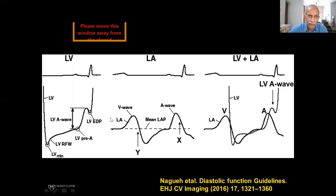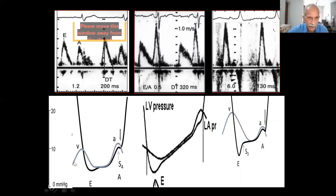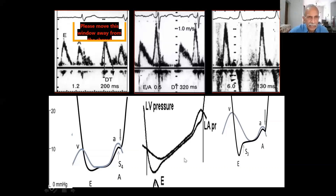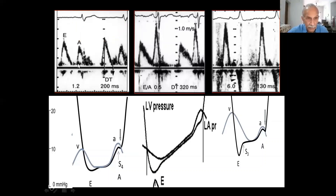Here is a Doppler pressure tracing. The normal one — LV comes down, LA pressure changes rapidly, and corresponding to that you see an E-wave. Then during diastasis there is no flow. When the atrium is contracting there is a flow. With these flow characteristics you are able to identify the morphology. In cardiology, most of us develop subconsciously pattern recognition. You've got to recognize: what does the E-wave look like? What does the A-wave look like?